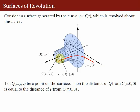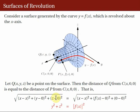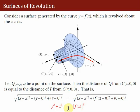By the distance formula: the distance of point Q from C is √((x−x)² + y² + z²), and the distance of point P from C is √((x−x)² + (f(x))² + 0²). Simplifying, we obtain the equation of the surface of revolution: f(x)² = y² + z². This is easy to remember — the axis of revolution is the X-axis, so f(x) squared equals the sum of the squares of the other two variables, y² + z².